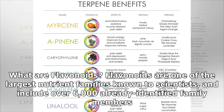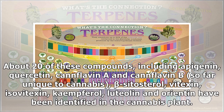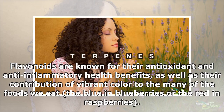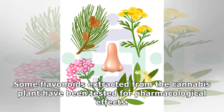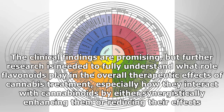Flavonoids are one of the largest nutrient families known to scientists and include over 6,000 already identified family members. About 20 compounds — including apigenin, quercetin, cannflavin A and cannflavin B — are so far unique to cannabis. Beta-sitosterol, vitexin, isovitexin, kaempferol, luteolin, and orientin have also been identified in the cannabis plant. Flavonoids are known for their antioxidant and anti-inflammatory health benefits, as well as their contribution of vibrant color to foods. Some flavonoids extracted from the cannabis plant have been tested for pharmacological effects; the clinical findings are promising, but further research is needed.